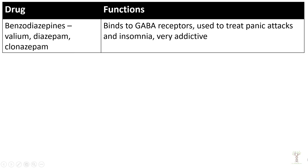Benzodiazepines — drugs like valium, diazepam, clonazepam, lorazepam, and any of the '-azepam' family — impact GABA receptors. Since GABA is our anti-anxiety neurotransmitter, benzodiazepines are used to treat panic attacks and sometimes insomnia, but they can be very addictive. Your brain can adapt to them, stop producing its own GABA, and you can become dependent.